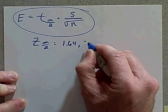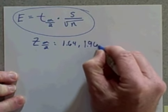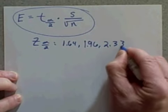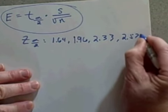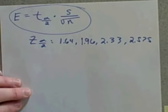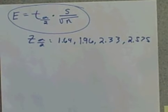For 98 percent it was 2.33, and for 99 percent, which is 2.575. We typically just use these four because we typically use just four confidence levels.